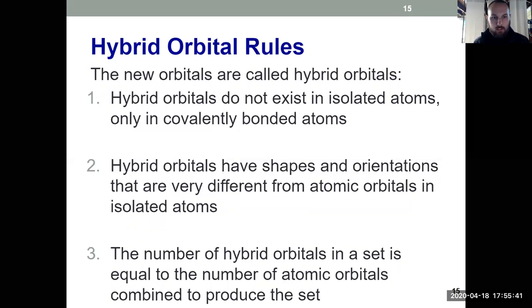It has shapes and orientations that are different from the atomic orbitals previously. That's kind of what we were alluding to before. Rule 3 tells us the number of hybrid orbitals in a set is equal to the number of atomic orbitals combined to produce the set, which is a lengthy way to say that however many orbitals go into the linear combination process is equal to the number of orbitals that come out.